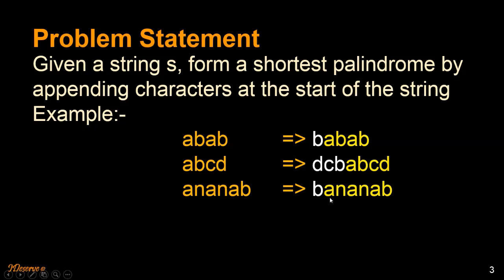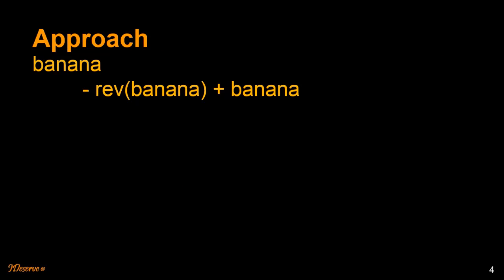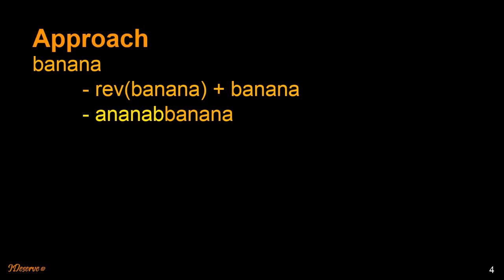And here is the third example, where we append B and form the shortest palindrome. The approach I want to follow is: I'll reverse the original string and append it to the start of the original string. That way I'll obtain a palindrome for sure.